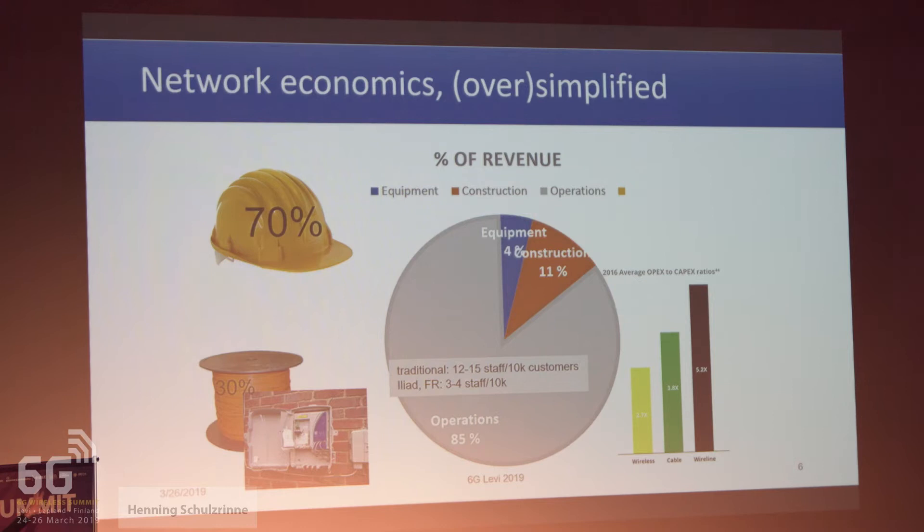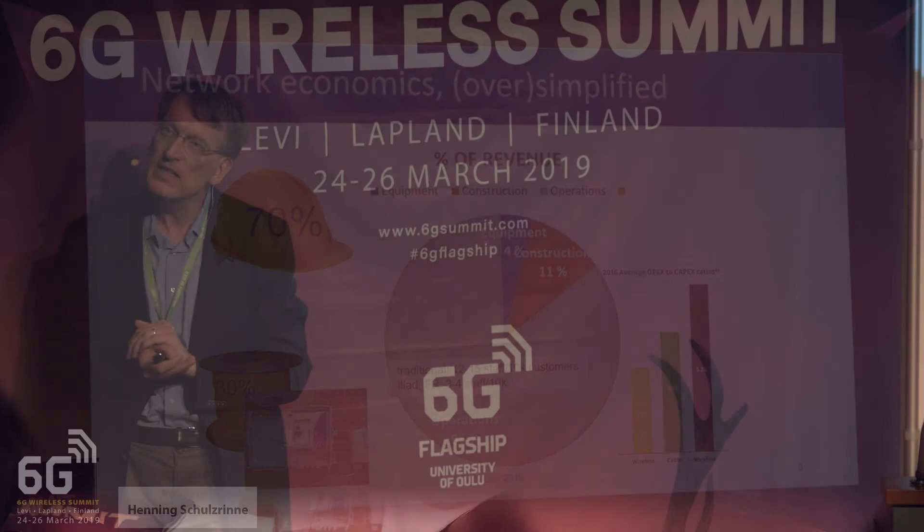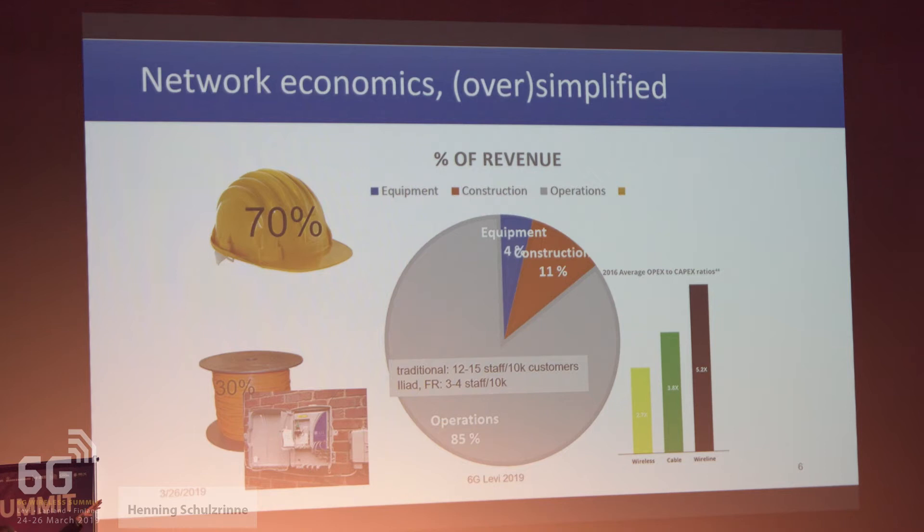A large part of what we think of as capital expenditure is not the kind of stuff we talk about — radios, networks, routers — it is stuff that people with hard hats do: build towers, lay fiber, build buildings. That consumes the large fraction of that 15%. For a wireline fiber network, 11% is construction — only 4% is all the electronic stuff that we love to talk about.